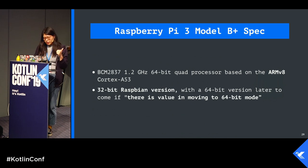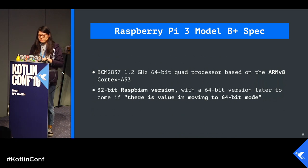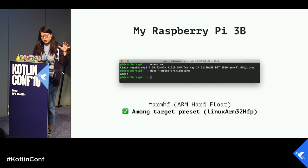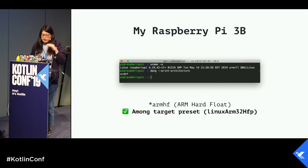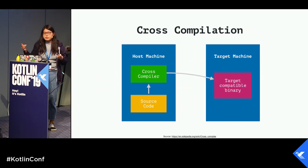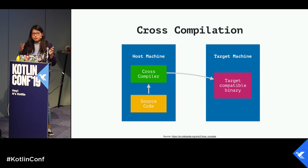For Raspberry Pi 3, we have a typical ARM v8 chip. At this point I was convinced it could work and was already supported by Kotlin Native. I did another check on my Raspberry Pi — it showed ARM-HF, which means hard float — and it's among the supported target presets: Linux ARM 32 HFP, where HFP means hard float port. At the beginning I was scared by all these abbreviations, since they don't make sense if you haven't had the knowledge yet.